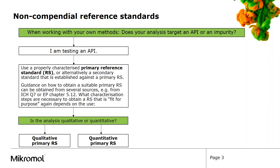Definitions of primary reference standards and guidance on how to obtain them is available from several sources like WHO, FDA, ICH Q7 guidelines, or EP General Chapter 5.12. The characterization needed to obtain a reference standard suitable for your purpose depends on how you answer the next question.